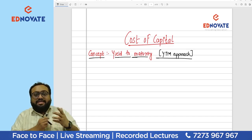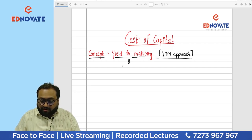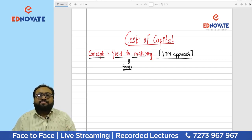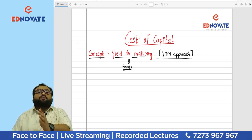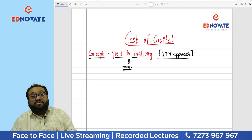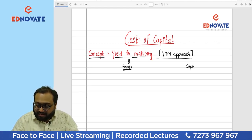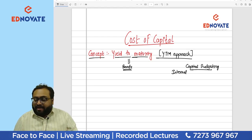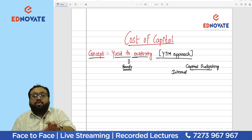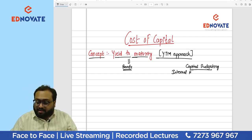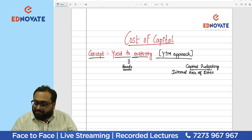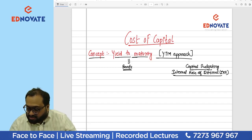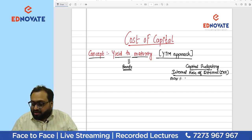Yield to maturity is a concept covered for bonds, just as we studied bond and debenture valuation in the cost of capital chapter. This same concept is also linked to the capital budgeting chapter — specifically the internal rate of return (IRR) method. IRR tells us the maximum percentage a project can earn.